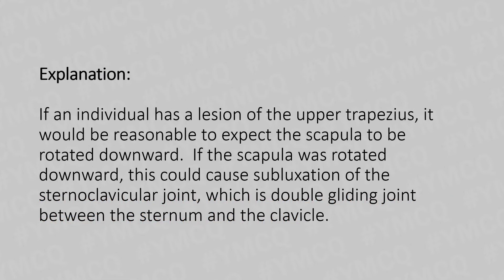If an individual has a lesion of the upper trapezius, it would be reasonable to expect the scapula to be rotated downward. If the scapula were rotated downward, this could cause subluxation of the sternoclavicular joint, which is a double-gliding joint between the sternum and the clavicle.